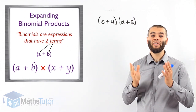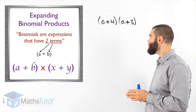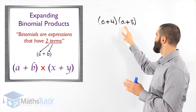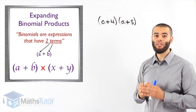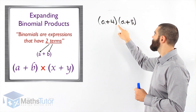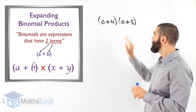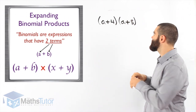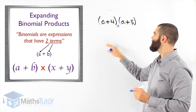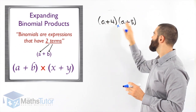Another word we know is expanding. Let's show you how it's done. Looking at this example: we have (a + 4) in brackets — that's a binomial expression — and we have (a + 5) in brackets — that's another binomial expression. When they sit side by side, we know straight away there is an invisible multiplication there. So we know everything inside here times everything inside here. (a + 4) in brackets times (a + 5) in brackets.